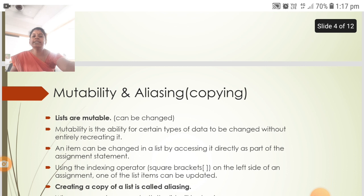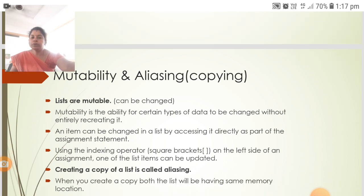Next, mutability and aliasing, that is copying. Lists are mutable, that means they can be changed. Mutability is the ability for certain types of data to be changed without entirely recreating it.